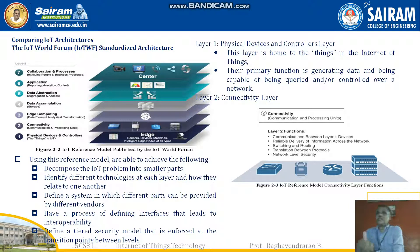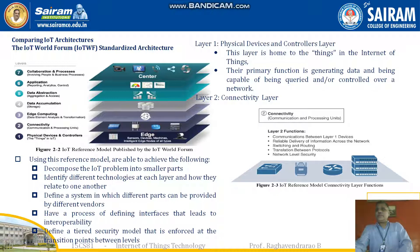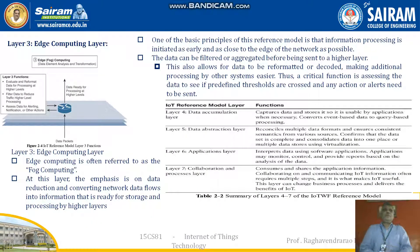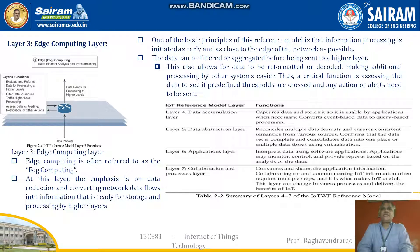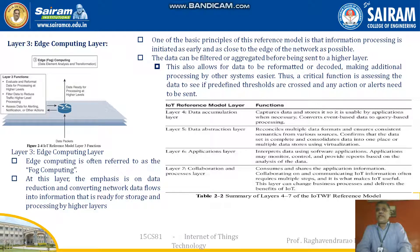Data collection is one function, followed by processing and moving ahead to the next steps, including data switching. The third layer is the edge computing layer, also referred to as the fourth layer in some contexts. This layer emphasizes data reduction and converting network data flows into actionable information.